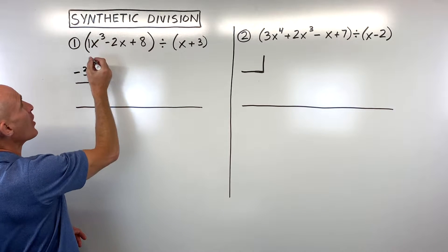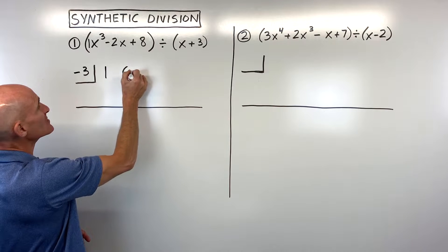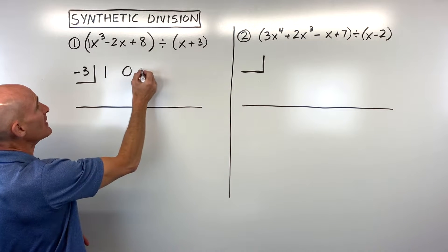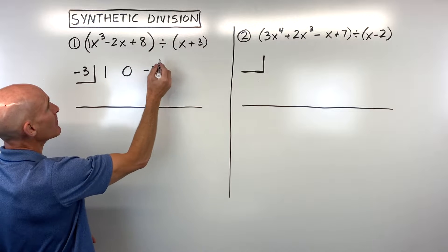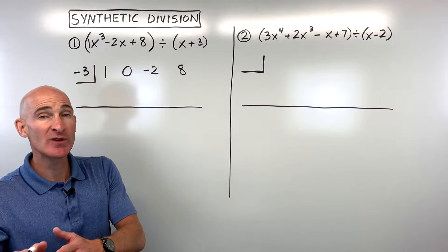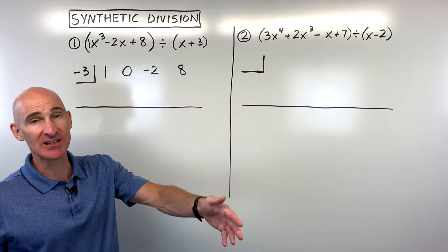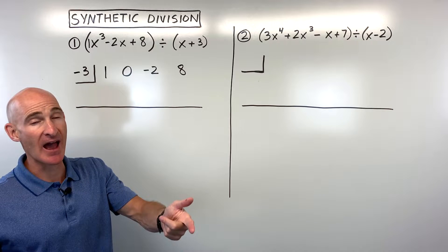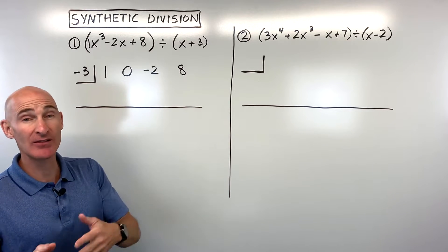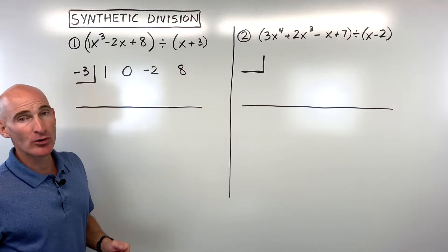So in this case, you can see we have like 1x cubed, so that's 1. 0x squared, so we're going to put a 0 as a placeholder. And then negative 2x, and then positive 8. And you can space those out a little bit. Now, sometimes you might be missing two terms. Like you might be skipping from x cubed all the way down to like a constant, or you're skipping x squared and x. So you'd have to put two 0s, or you might need three 0s. So just kind of pay attention that they're in descending order like that.